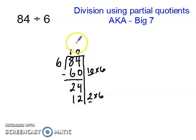So I'm going to write my 2 up here, part of my quotient. And then we're going to subtract. So I have 24 minus 12, and that gives me 12.